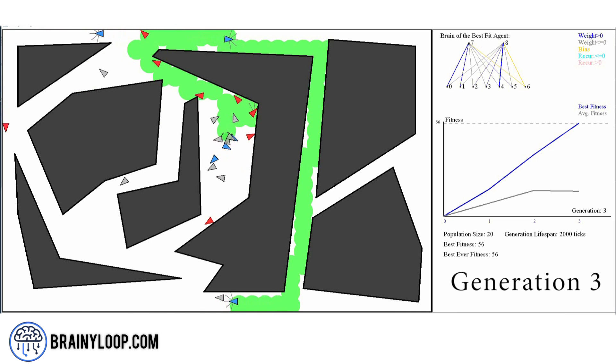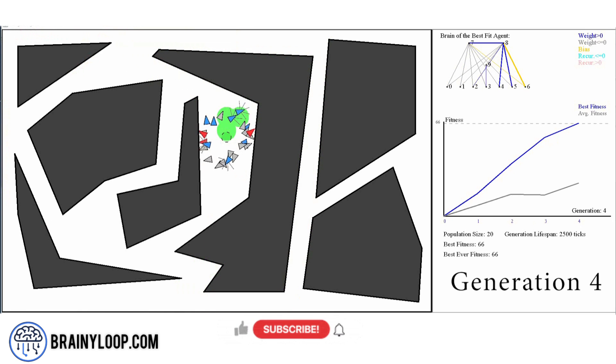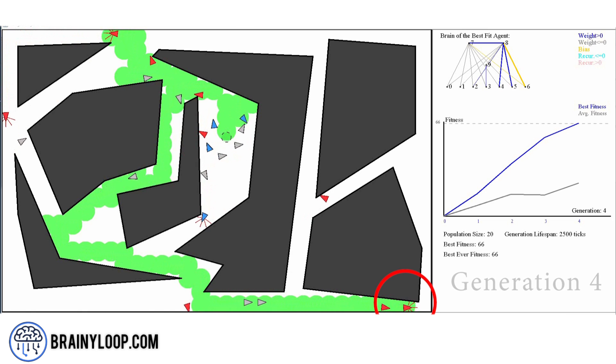However, the agent is still not good with the sharp turns and it gets stuck in the corners. The agents in the fourth generation are getting better in navigating the maze but they are a bit slow when turning to avoid the obstacles. Also, they have problems navigating through a narrow pathway.